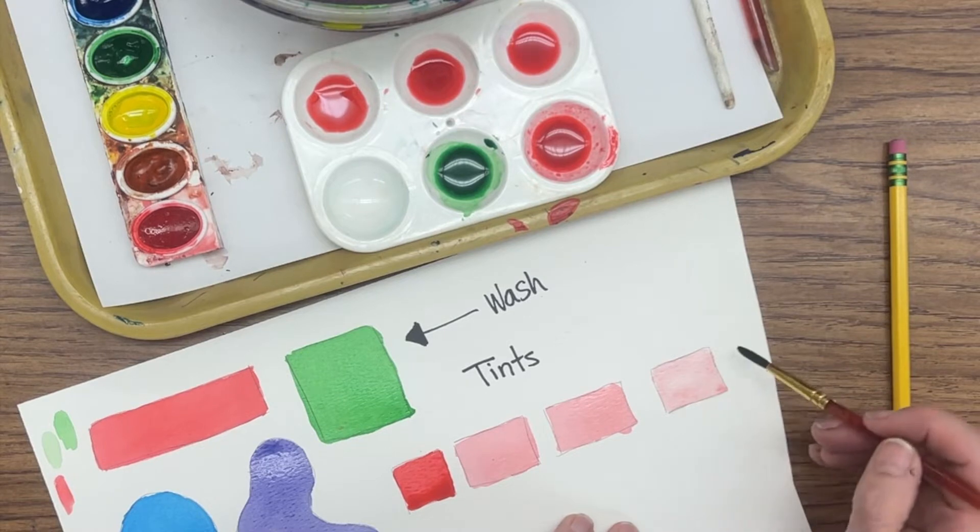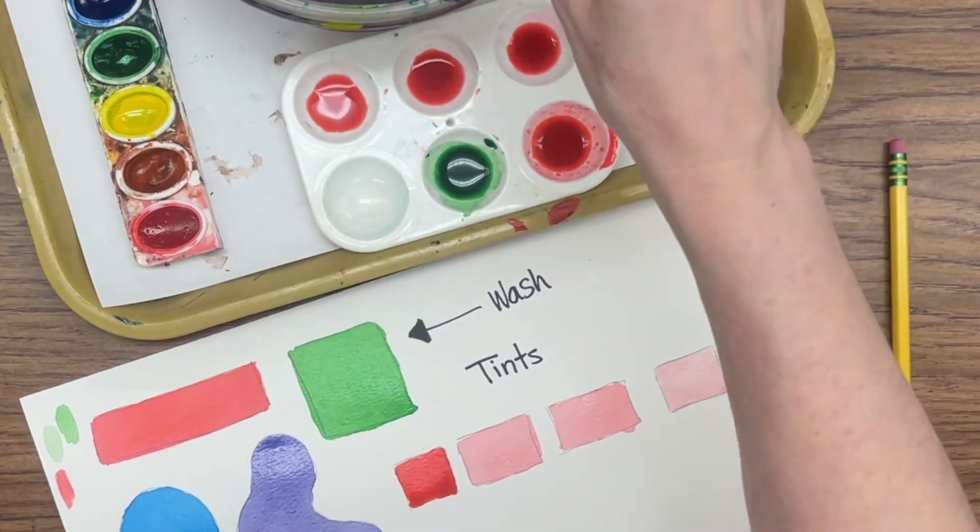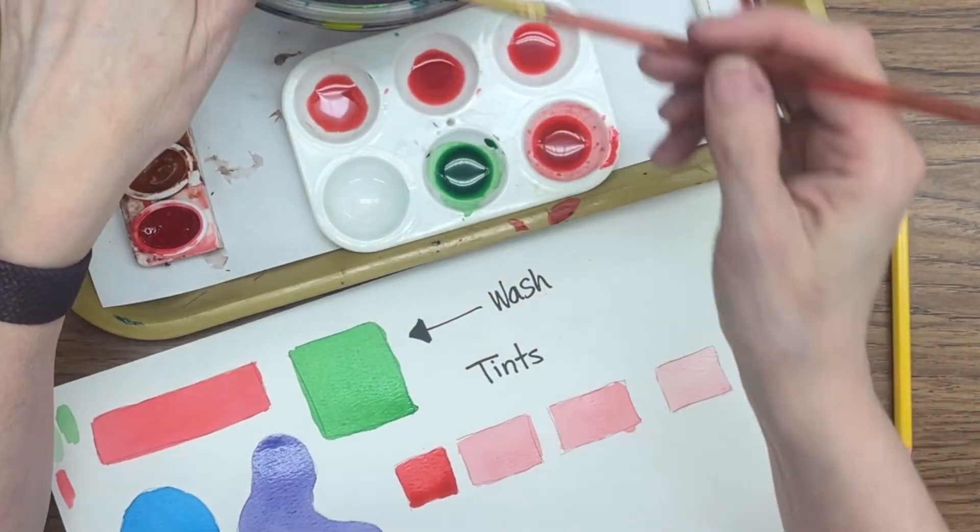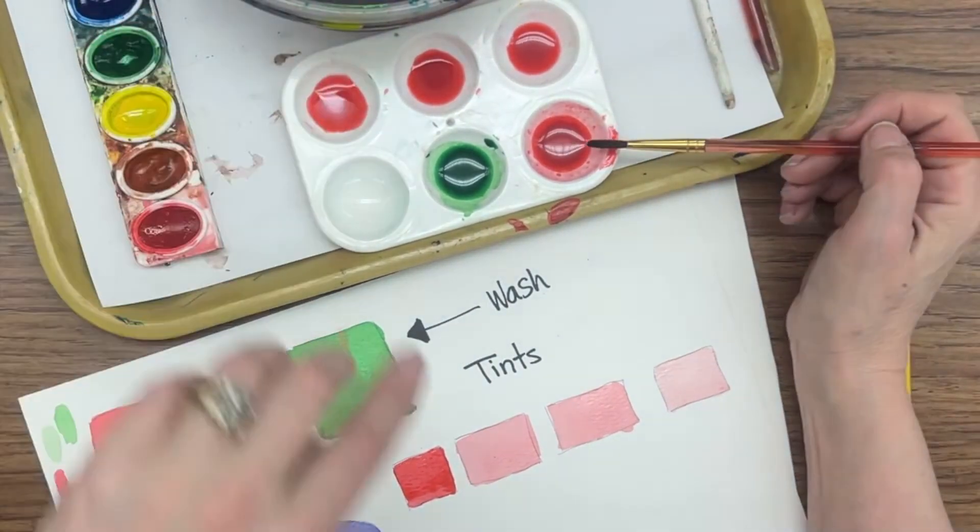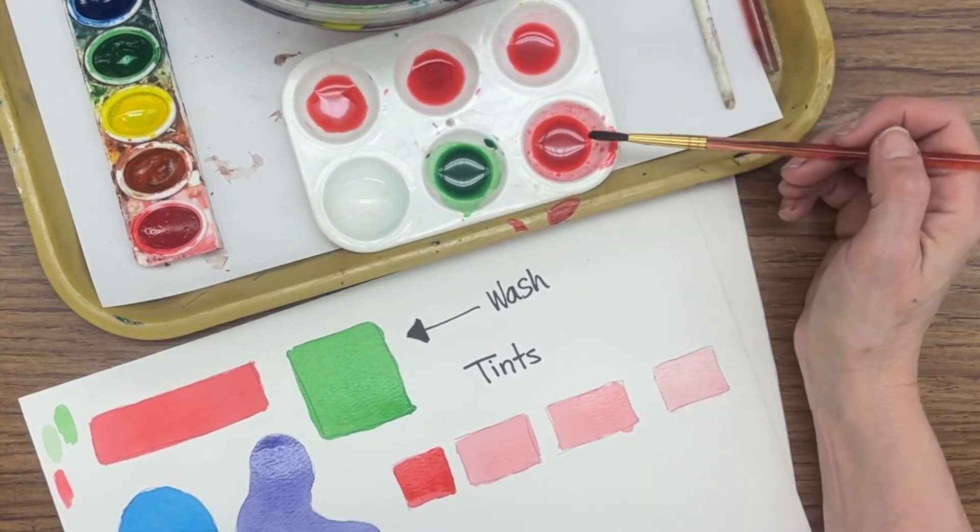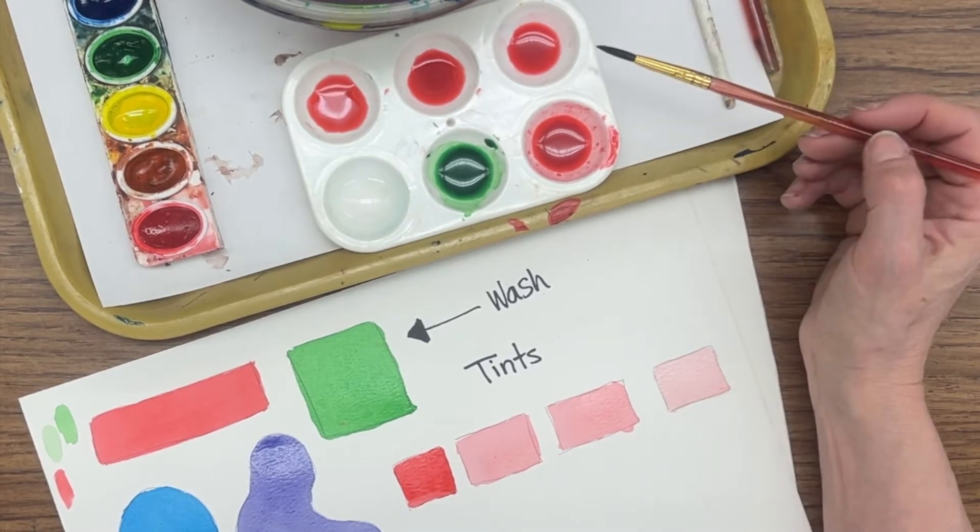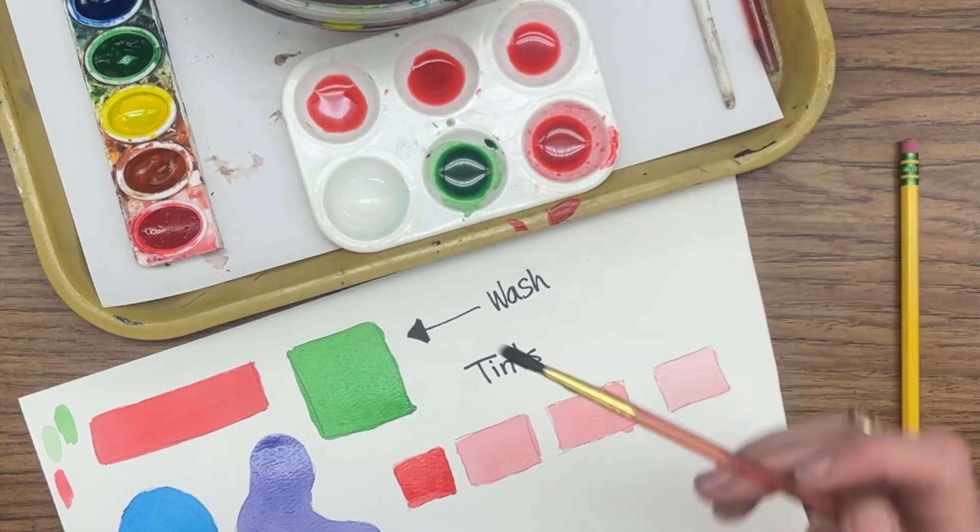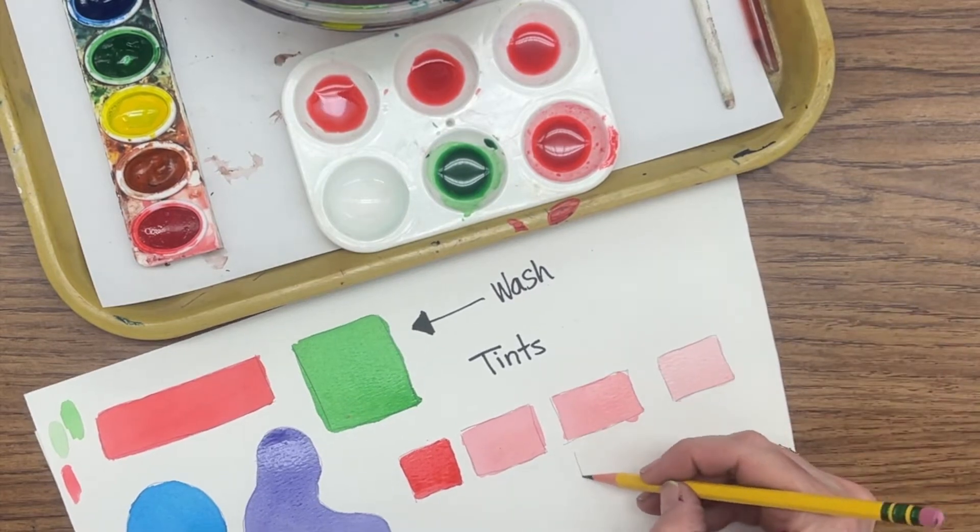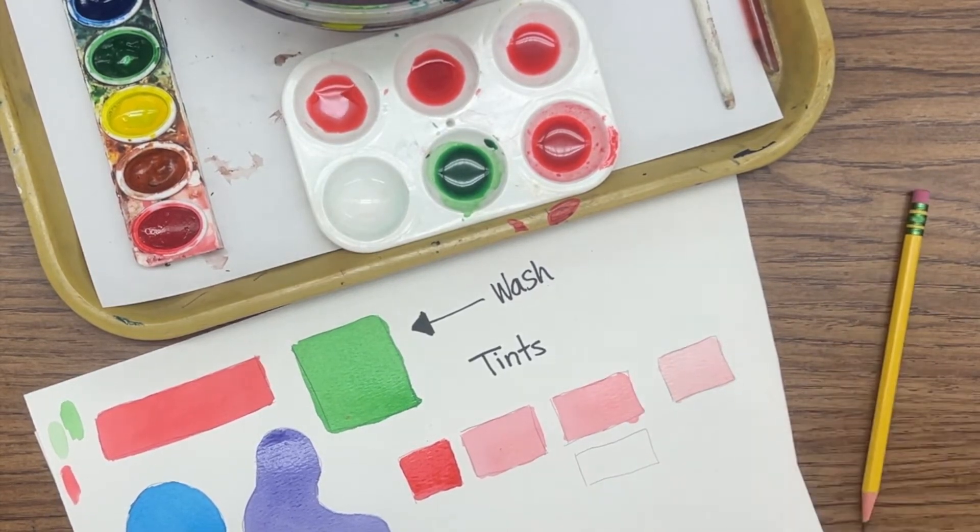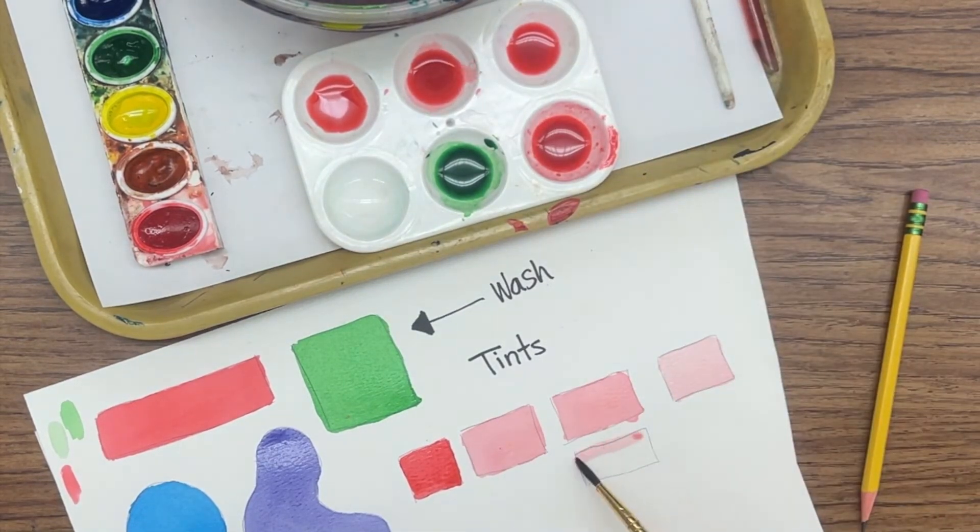So for lighter colors, or for tints, the color that you're using, you're going to make a wash in a cup, in one of the little holes in the little tray. The more water you add, the lighter your tint is going to be. So let's try this one again. I'm going to touch off my excess and see if that's better.